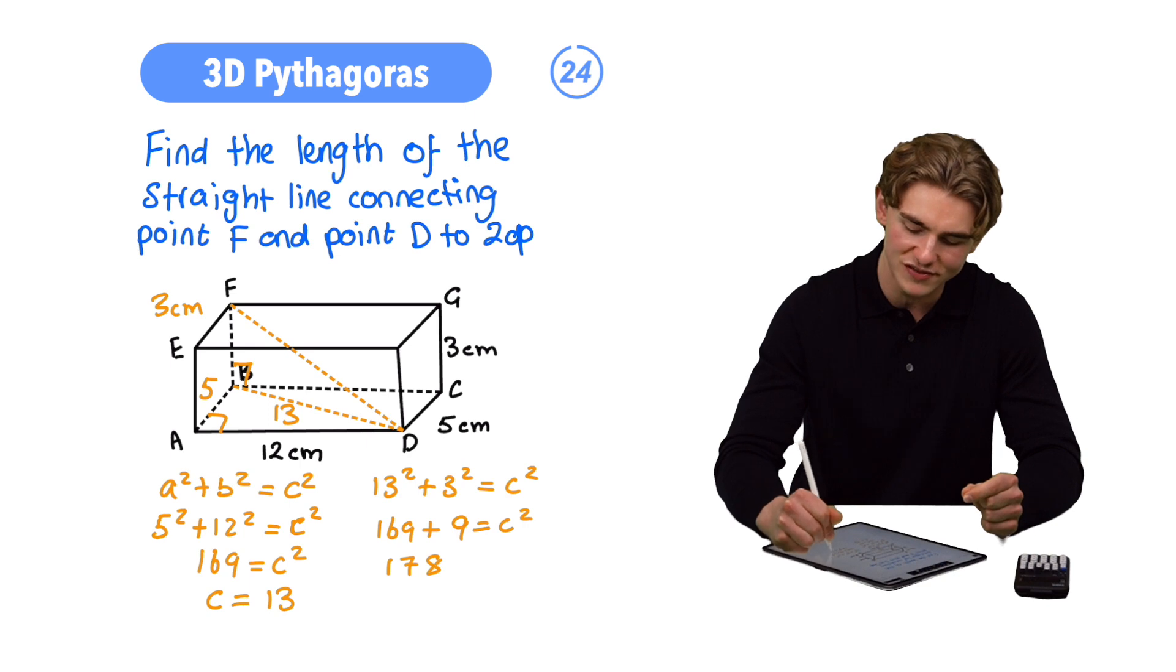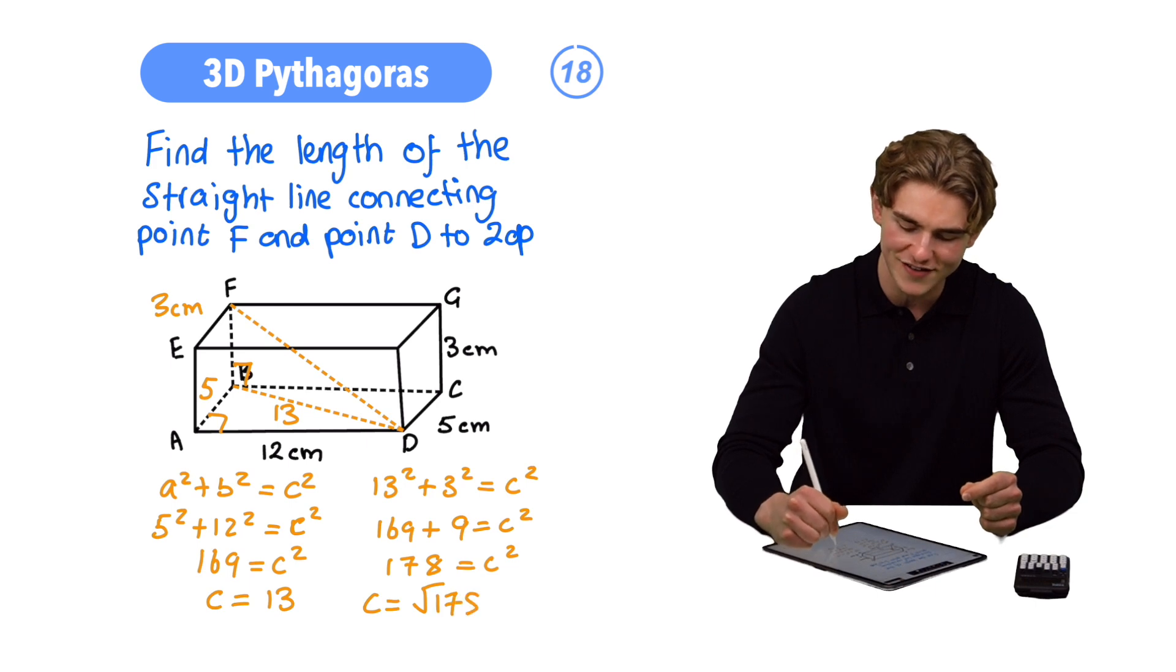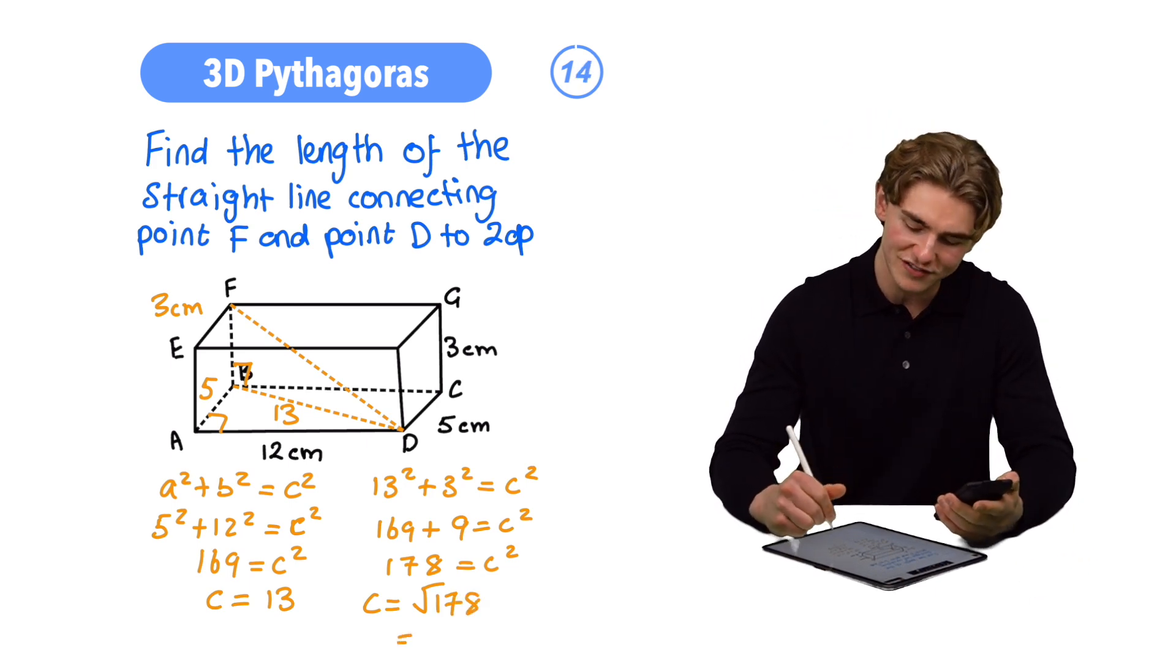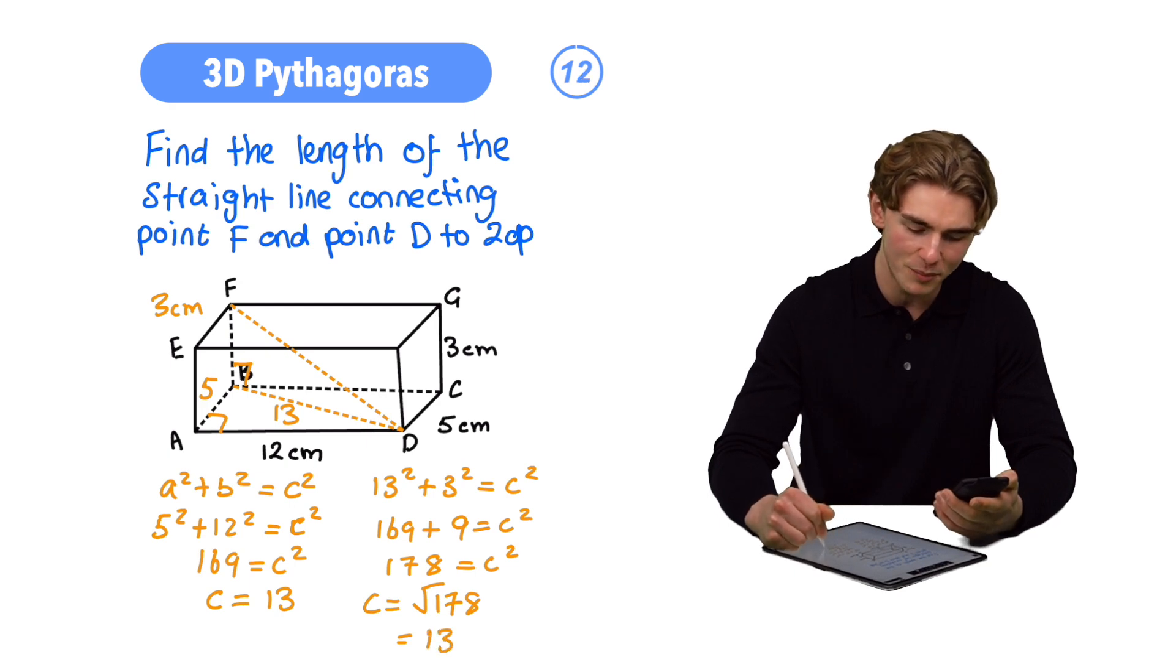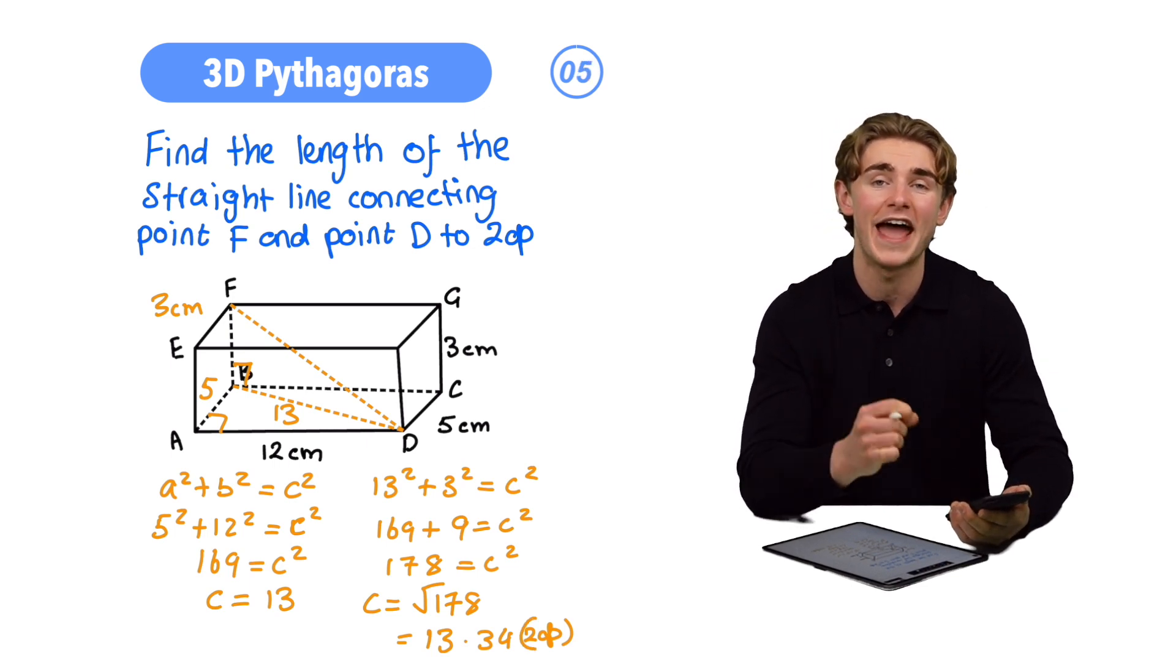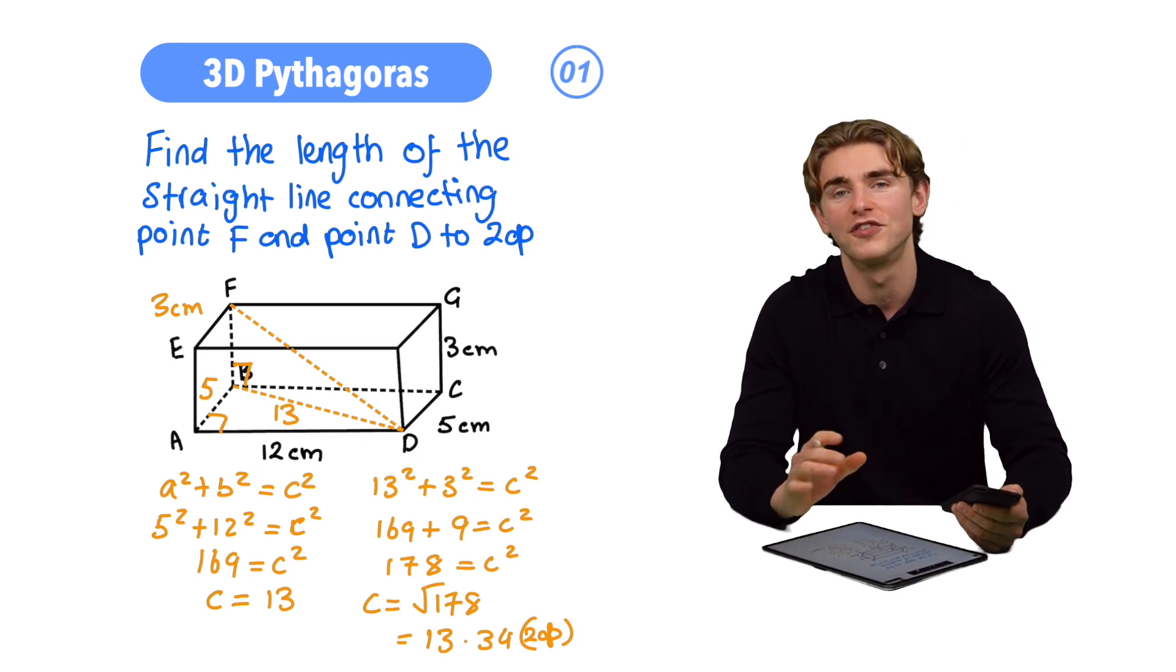Now, to find the value of C, we can do the square root of both sides. C is going to be equal to the square root of 178, which, if we type into our calculator to two decimal places, is going to be 13.34, and that is going to be our answer for the length of the straight line connecting point F and D. I know that was hard. Feel free to watch again. Hopefully, it will make it clearer.